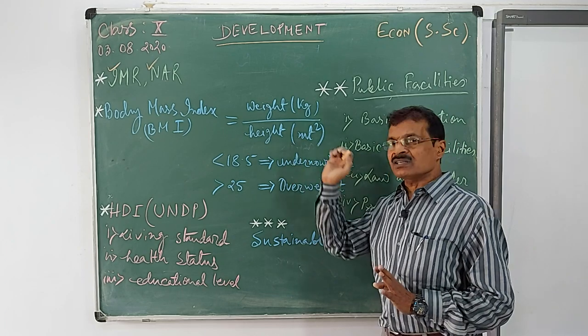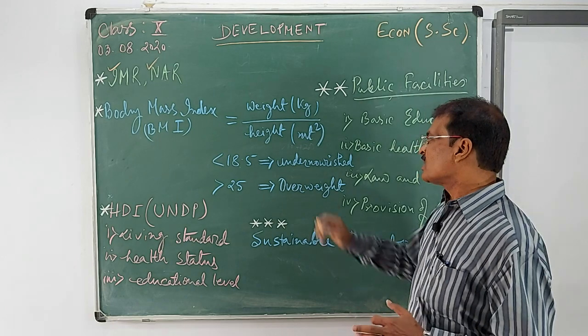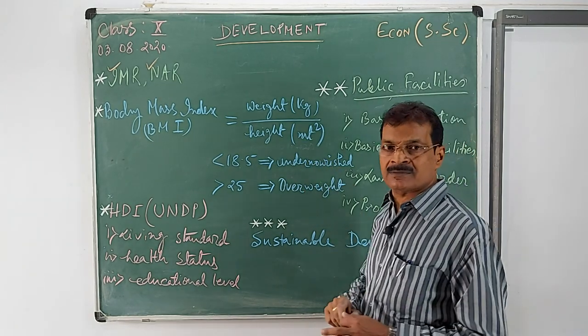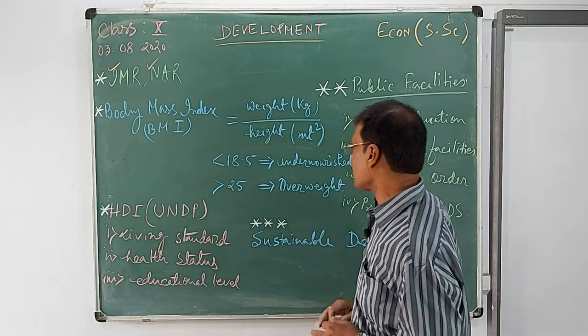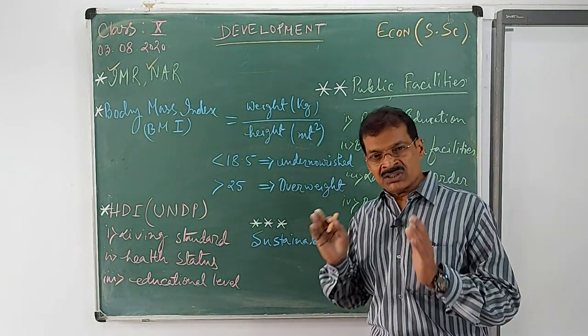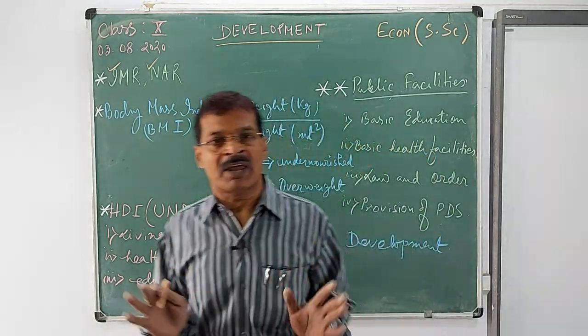When this body mass index is calculated, if it is less than 18.5 then the person is considered to be undernourished, and if it is greater than 25 the person is overweight or obese. So these two are the extreme cases. Between that the BMI should remain.